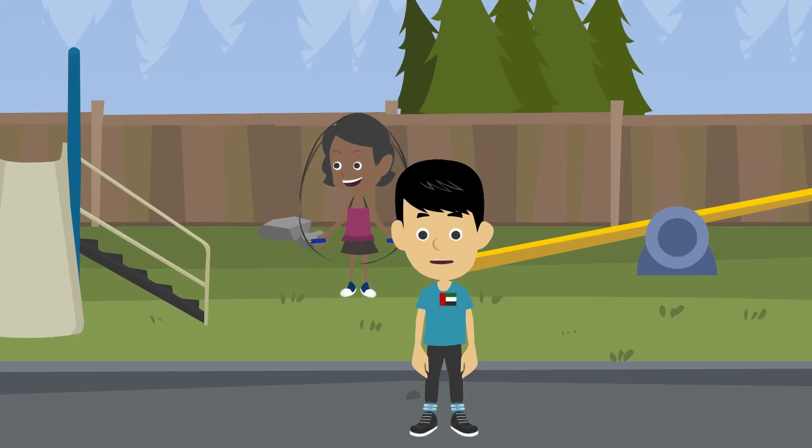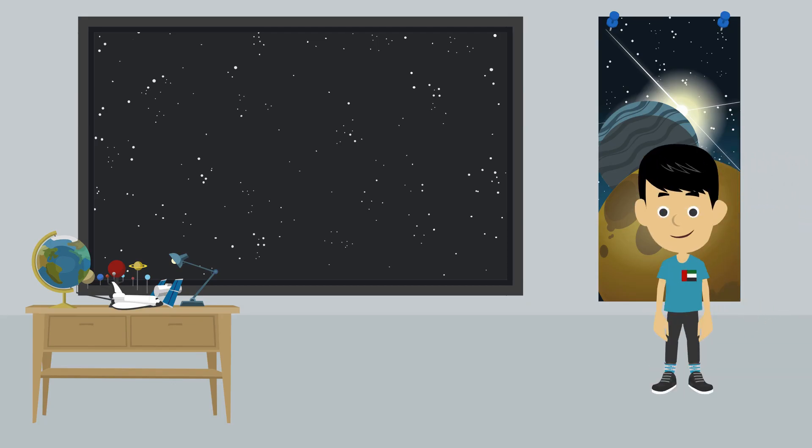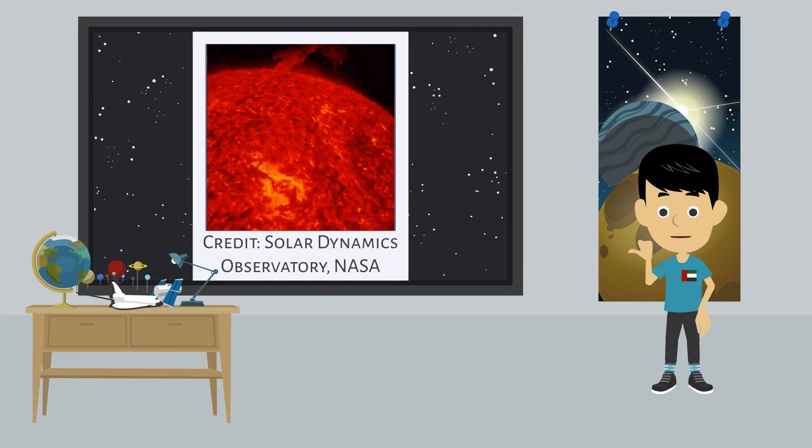Today we'll be talking about our star, the Sun. The Sun is the biggest, hottest object that lies in the center of our solar system. It's a fiery ball of extremely hot gases.